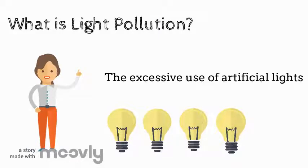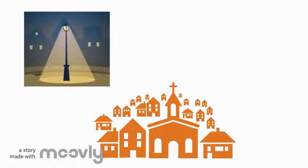Light pollution is the excessive use of artificial lights. These lights can come from streetlights, inhabited areas, and your own home.